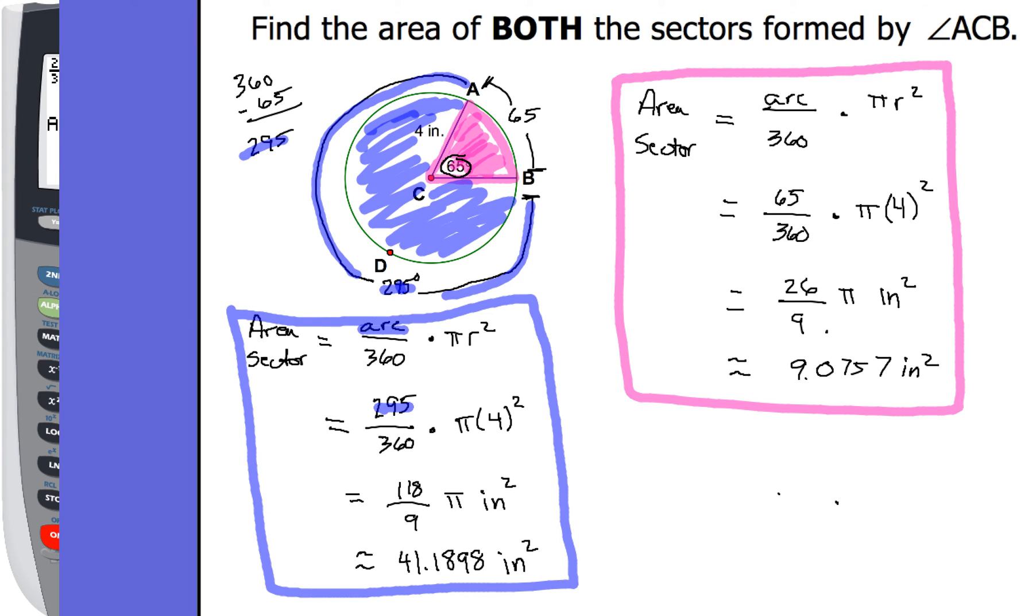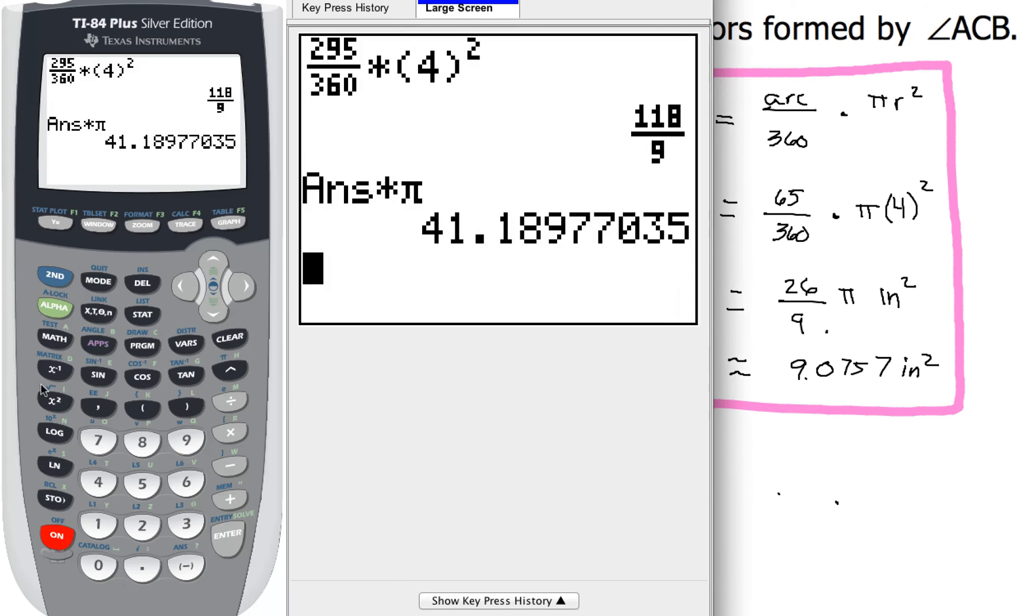So how did you do? Hopefully you came up with 118 over 9 pi square inches or an approximation of about 41.1898 square inches based on what our TI-83 or 84 graphing calculator gave us. So that's how you can go ahead and compare those. But we're not done.